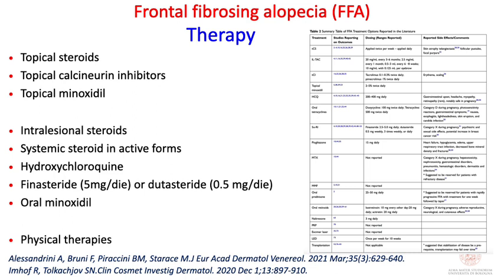Regarding therapy, there are many papers now reviewing treatment options. The first-line therapy is steroid treatment — as expected for a lymphocytic cicatricial alopecia — and you can select topical, intralesional, or systemic steroids depending on activity and severity. If there is no response to steroids, hydroxychloroquine can be selected. From the initial form, you can also start with topical or oral minoxidil.